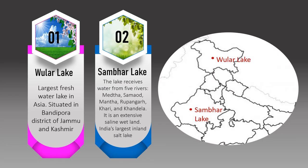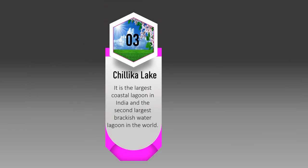Looking at the map, Wular Lake is in the state of Jammu and Kashmir in Bandipora district, while Sambhar Lake is in Rajasthan. Chilika Lake is the largest coastal lagoon in India and the second largest brackish water lagoon in the world. A lagoon is formed by a salt bar, and Chilika Lake is quite famous for its lagoon formation.